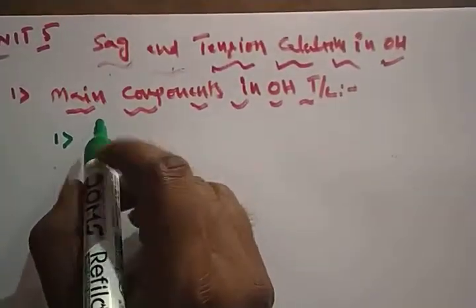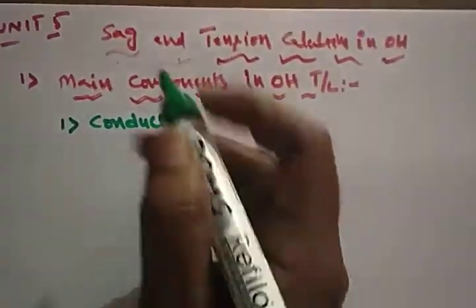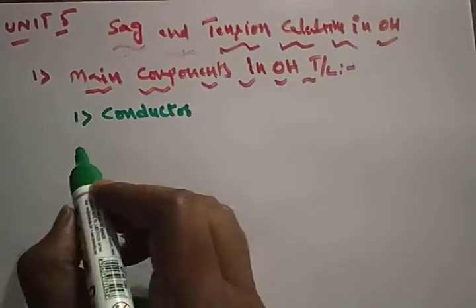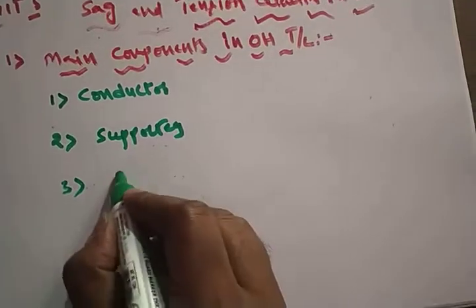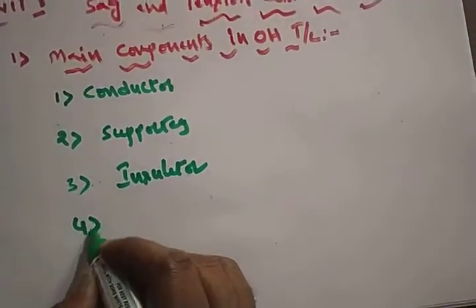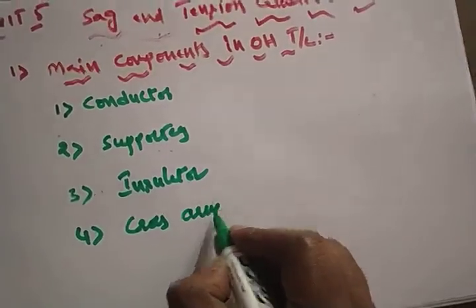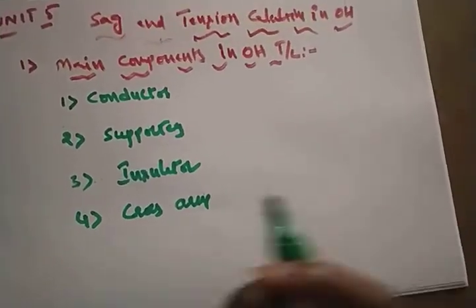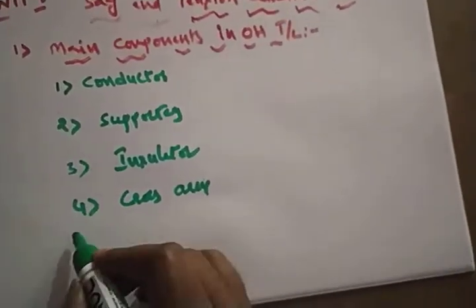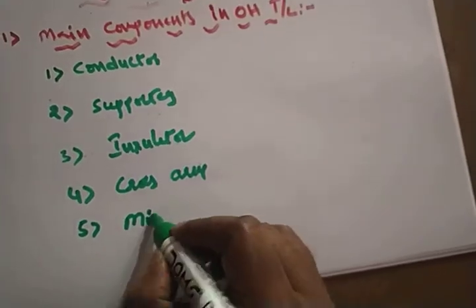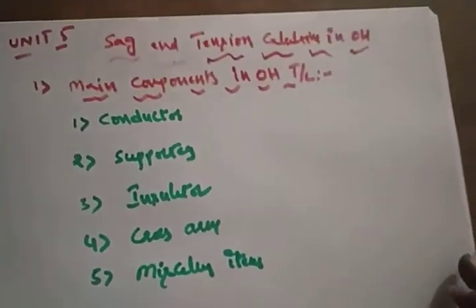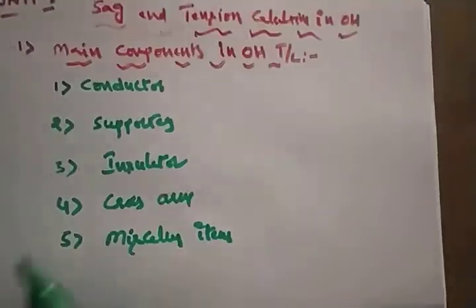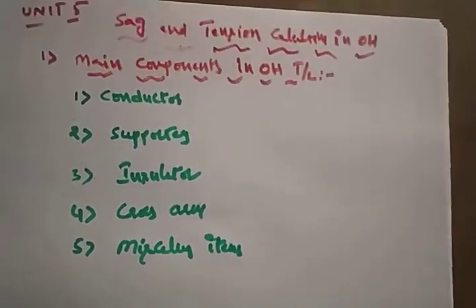So we have different components in a transmission line. The first component is a conductor. After that we have supporters, then insulators, then cross arms, and finally miscellaneous items. You will see all these things in real life whenever you observe transmission lines.